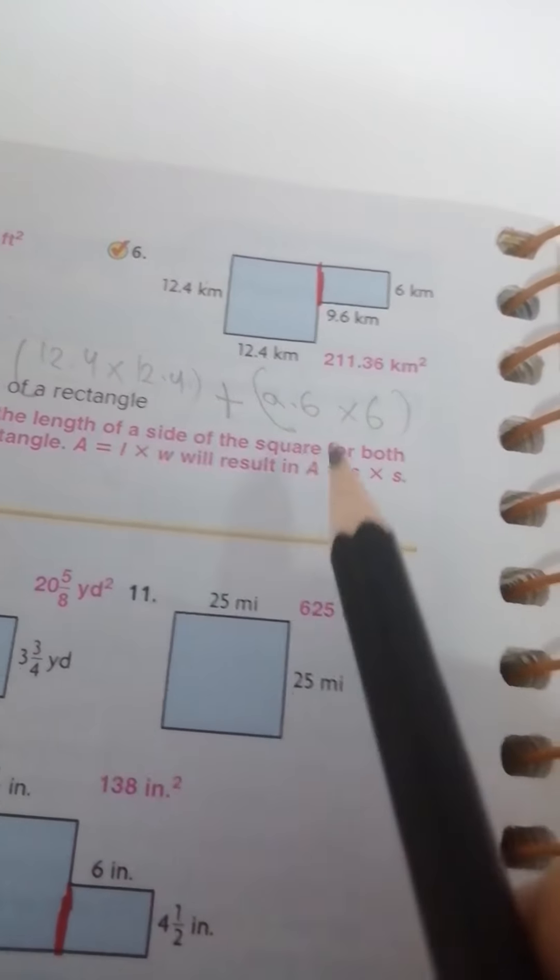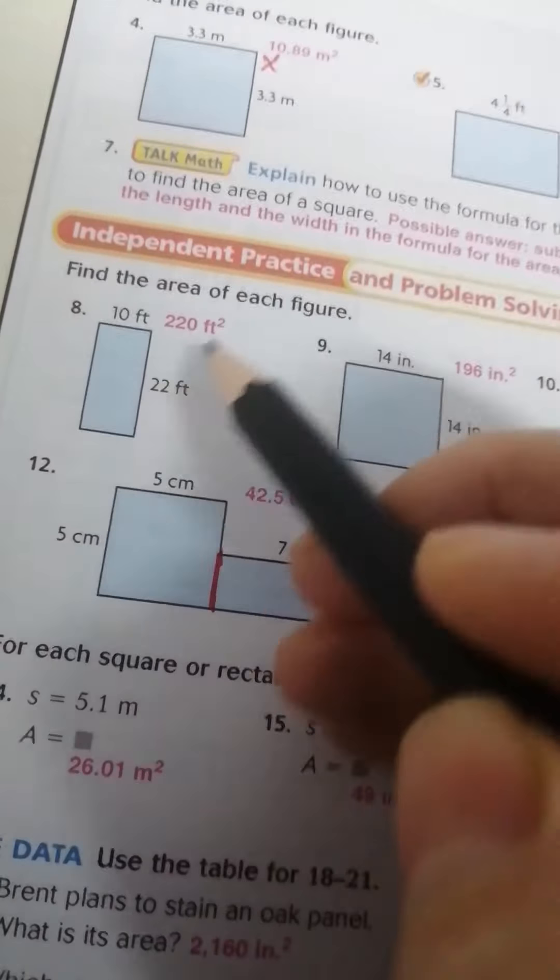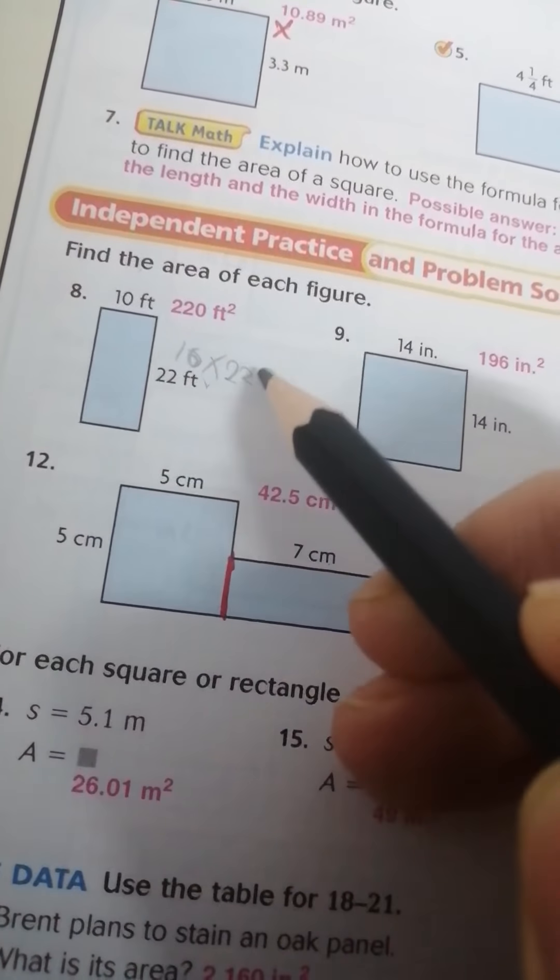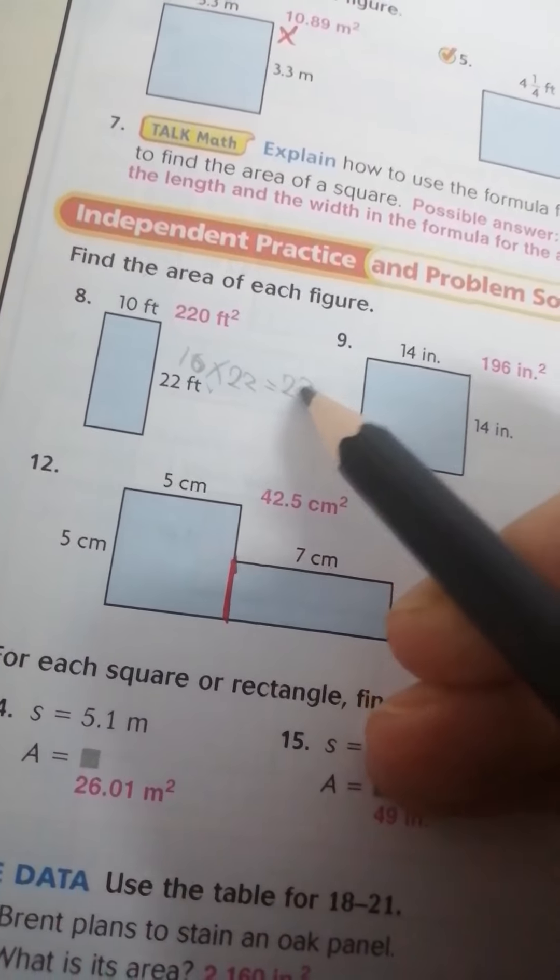Here find the area the same, 10 by 22, just 220, equal 220 square feet. 14 by 14 then equal 196 square inch.